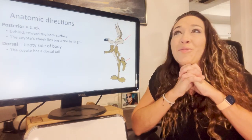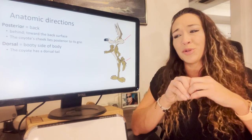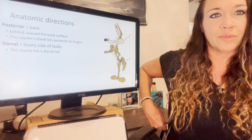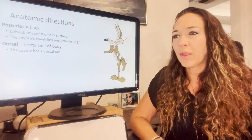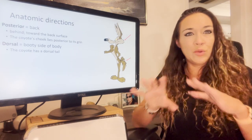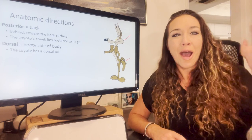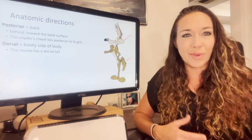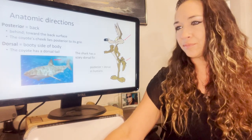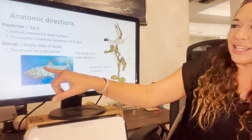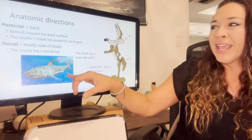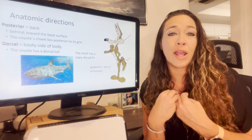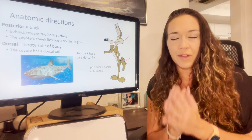A lot of this terminology overlaps, especially when talking about animals. It's a little bit easier for us because we walk upright — anterior is the head end, posterior is the back end, dorsal is the backside. It's a bit different in animals, so you might hear me use them interchangeably. I'm mostly marine biology background, so if I slip into saying 'dorsal' instead of 'posterior,' that's because I'm used to working with animals. Like a great white shark — his backside is also his dorsal side.